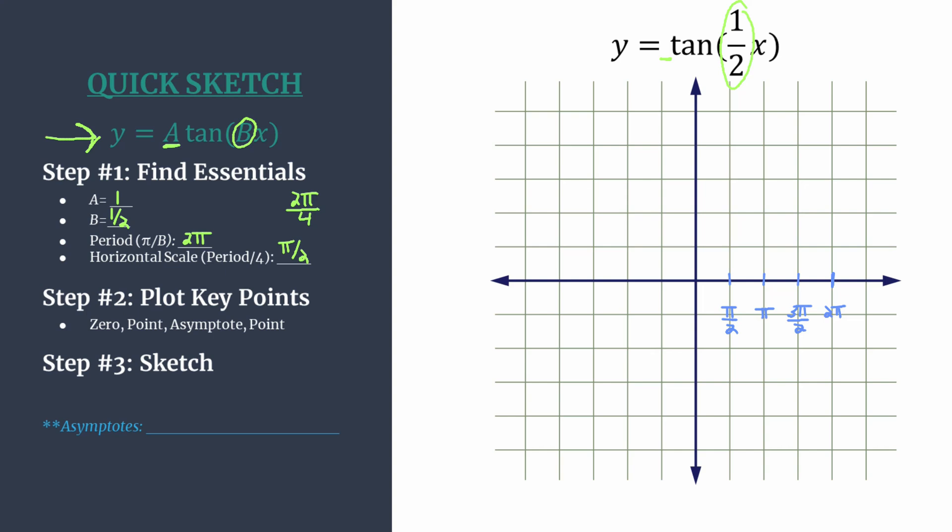Then look at your value of a. That'll help you to determine a good scale for your vertical axis. Since a is one, all we need to do is count by ones up one and down one. So now we're ready for the big part.